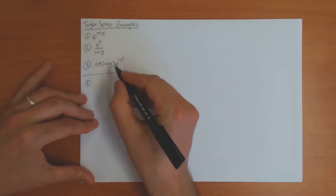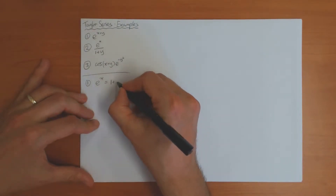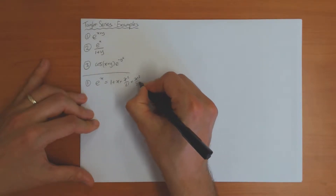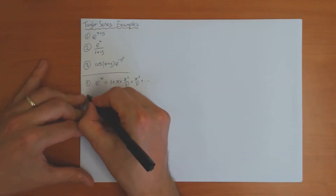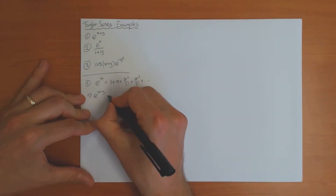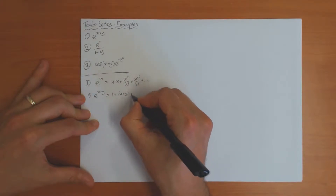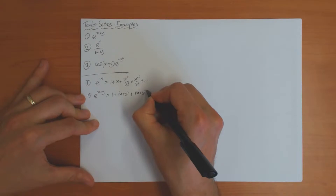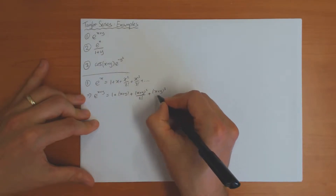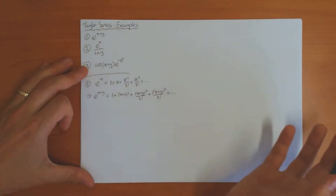Number one is quite a simple one: e to the x plus y. We know the Taylor series of e to the x — this is one plus x plus x squared over two factorial plus x cubed over three factorial and so on. So all you have to do to compute this Taylor series is just change x into x plus y. This is therefore equal to one plus (x plus y) plus (x plus y) squared over two factorial plus (x plus y) cubed over three factorial and so on. You just change x into x plus y.